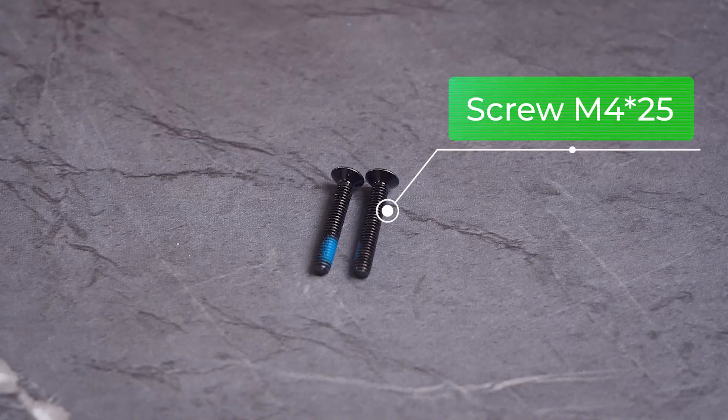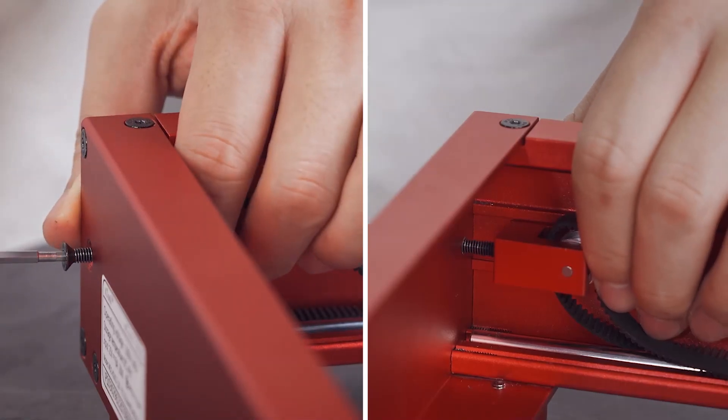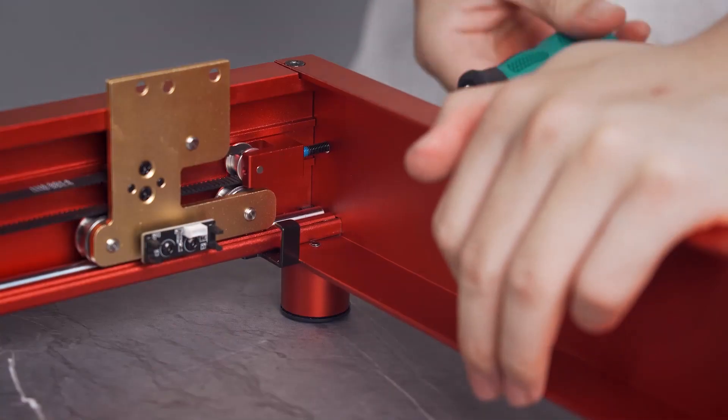Use screws to fit the idler pulleys. The screw is used to set the tension of the timing belt. Do not fully tighten it, otherwise the timing belt may be damaged.